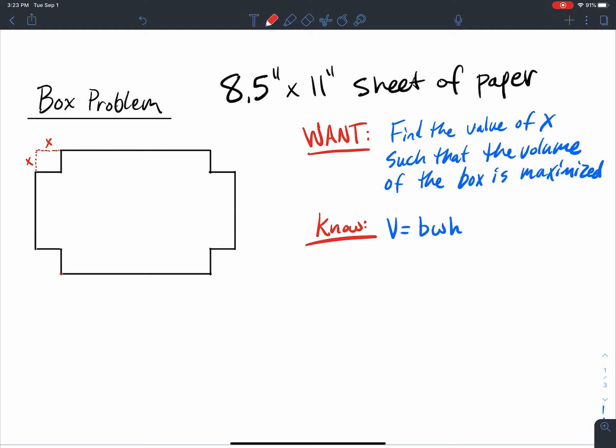We already know that the height here is going to be x. We just need to figure out how we're going to define the base and the width in terms of x. All these corners here, we're cutting off x amount so that when we fold it up, it will be a height of x on each side.